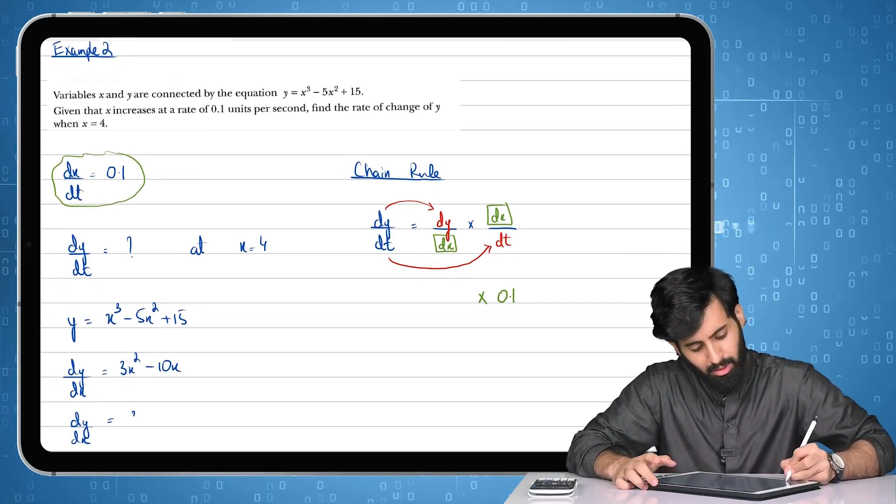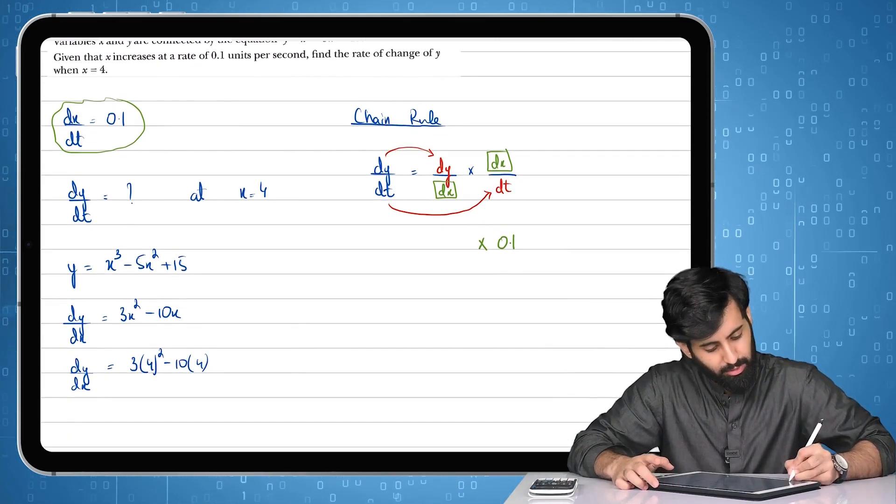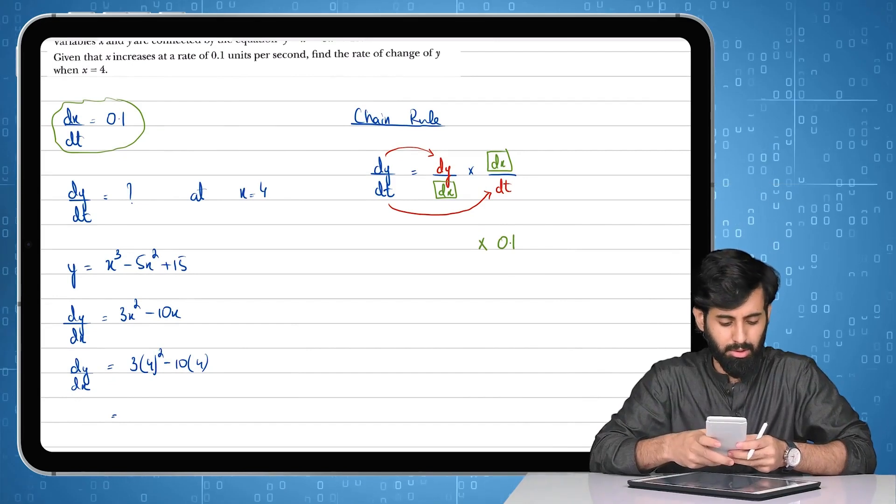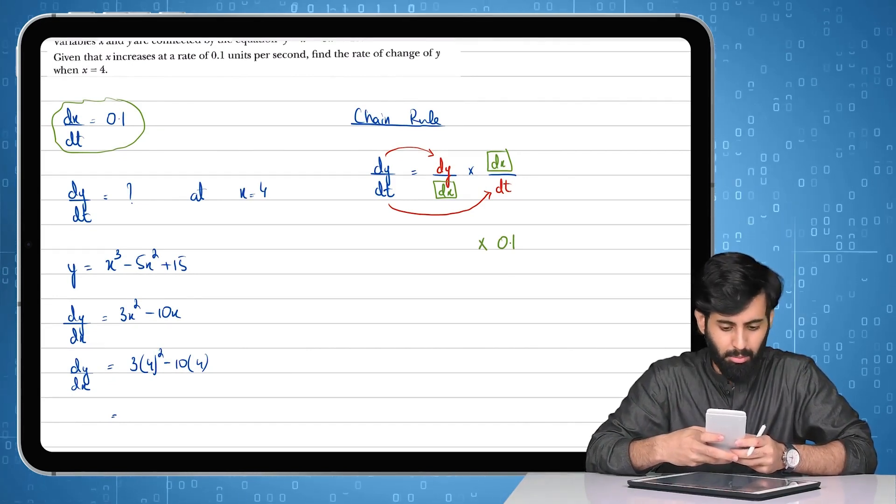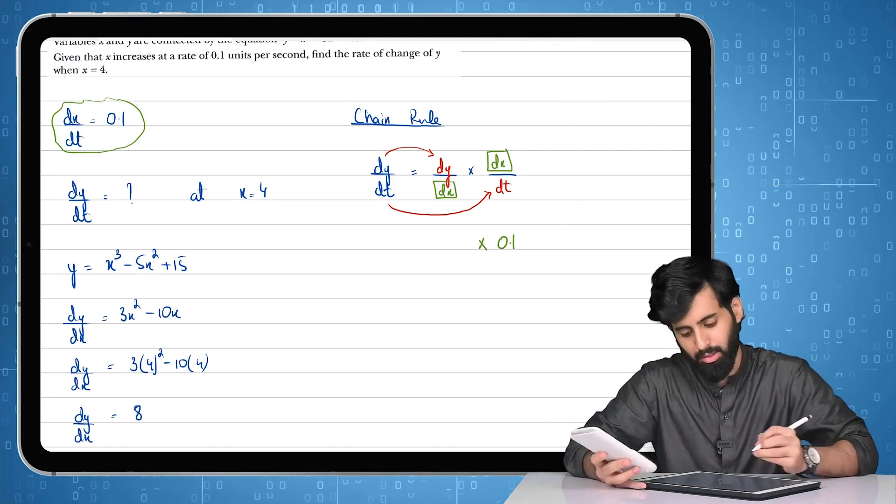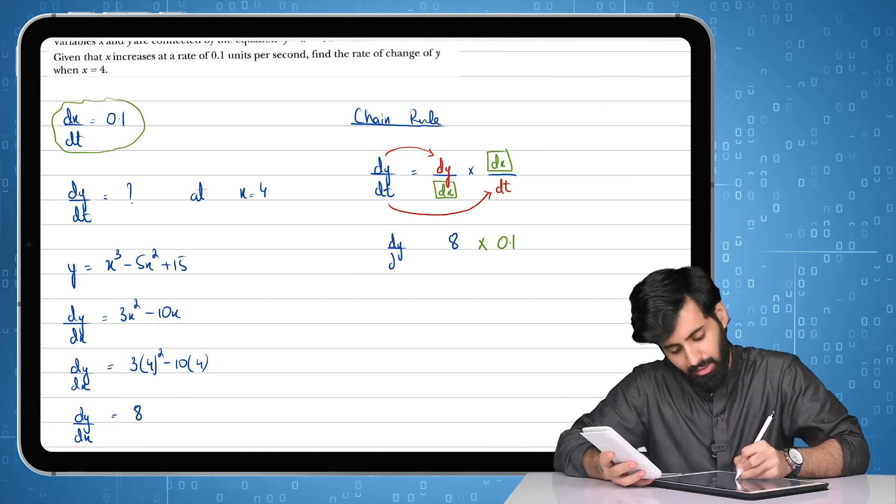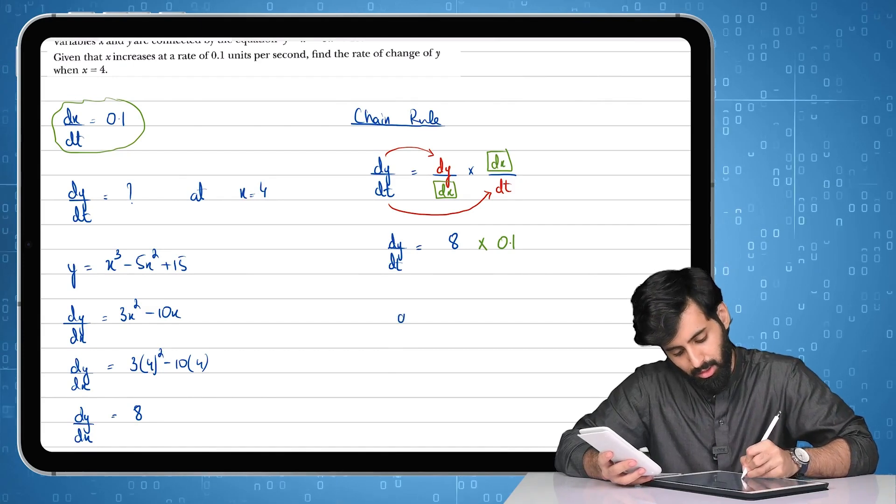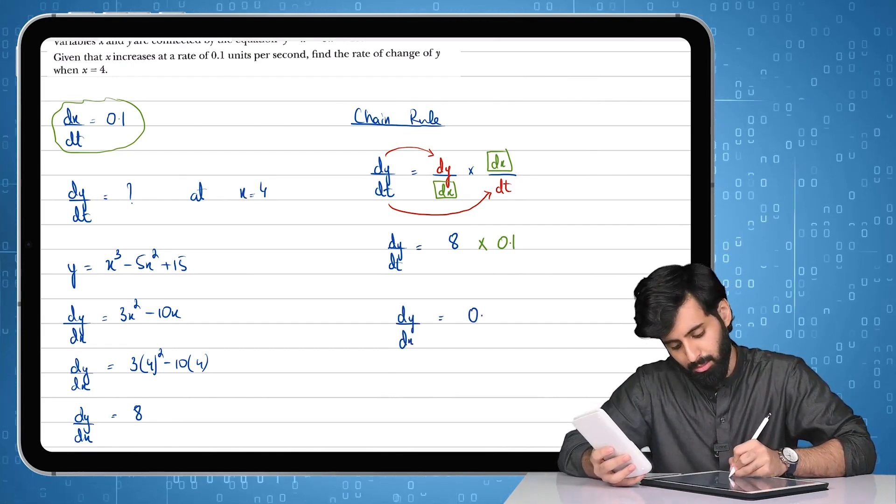Then I'm going to plug in the initial value of x, which is equal to 4. So 3 times 4² minus 10 into 4. Let's work this out: 4 times 4 is 16, 16 times 3 is 48 minus 40. So that means dy/dx is basically equal to 8. Now that we have dy/dx also, I'm going to write dy/dx over here. And this is going to give me dy/dt.